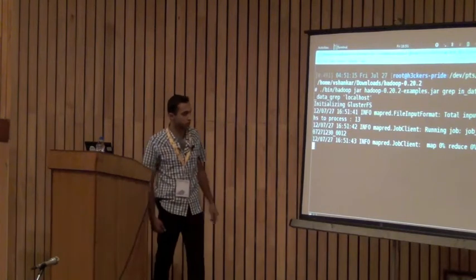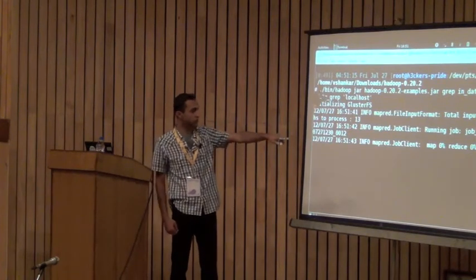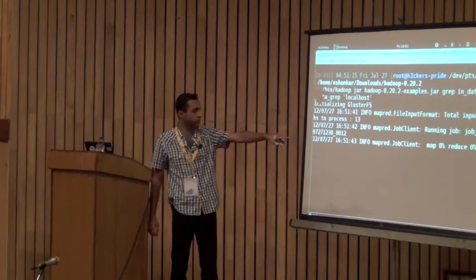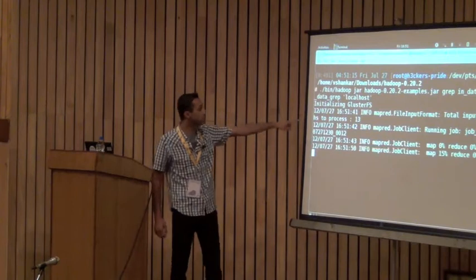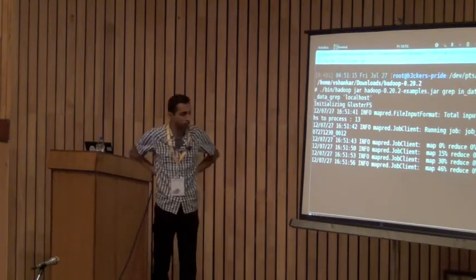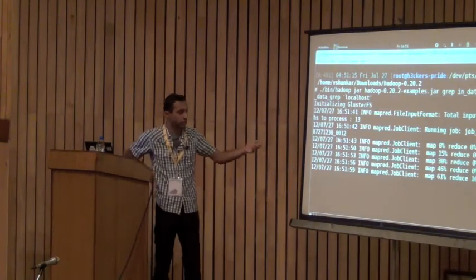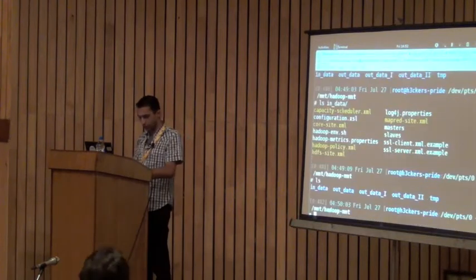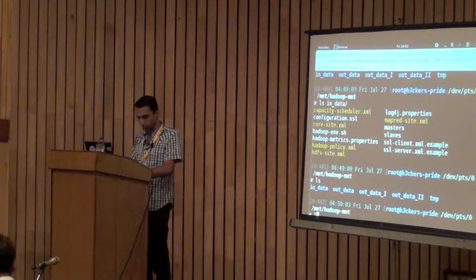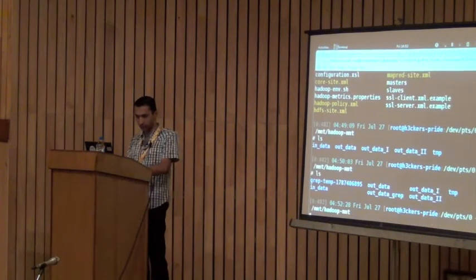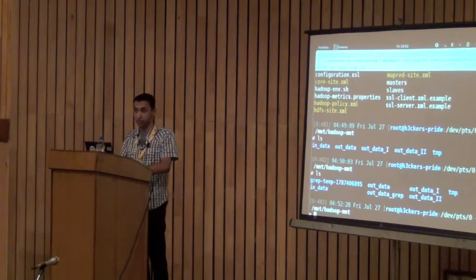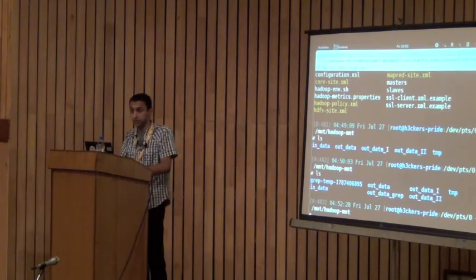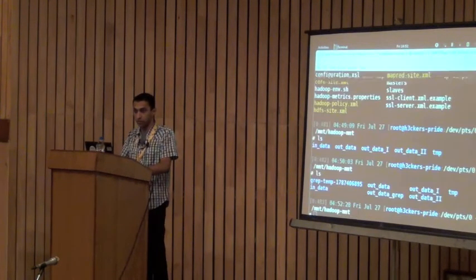Now it is running MapReduce — 0% Map, 0% Reduce. It is using GlusterFS as the backend. Slowly the Reduce will catch up. Once this is done, if you do a normal ls in parallel, you will see the output directory getting created. This is what I talked about with multi-protocol access — you can run it from Hadoop and see the output from a different mount point, via HTTP, or whatever protocol you prefer.